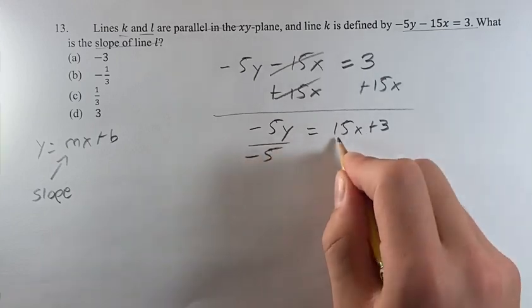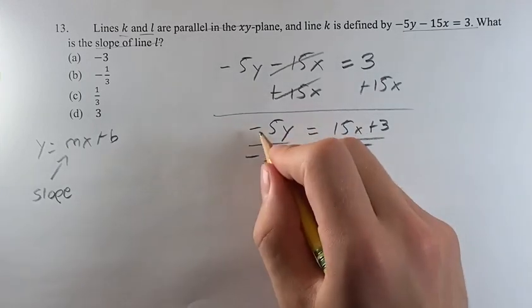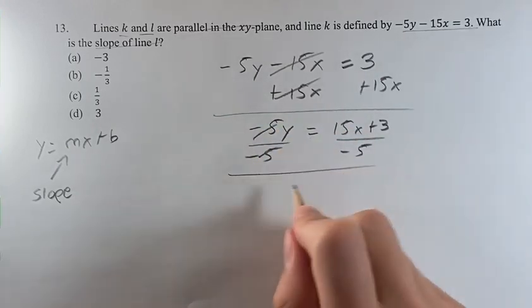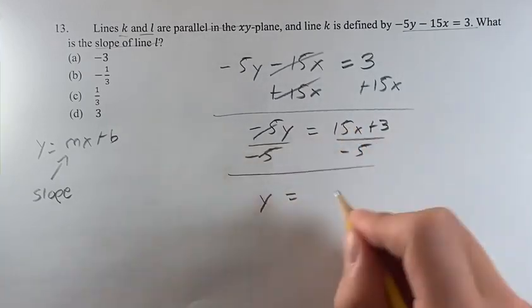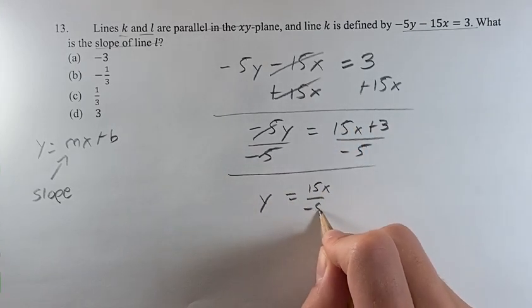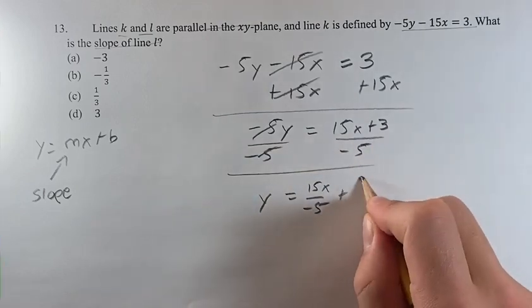Next, you're going to divide both sides by negative 5, leaving you with just y on this side, is equal to 15x divided by negative 5, plus 3 divided by negative 5.